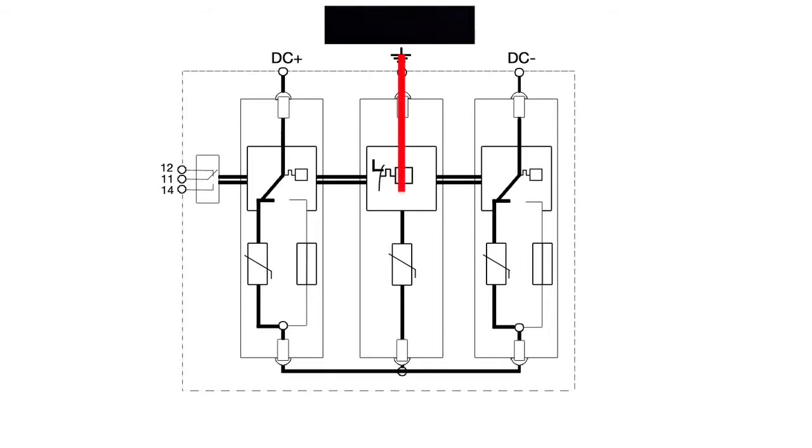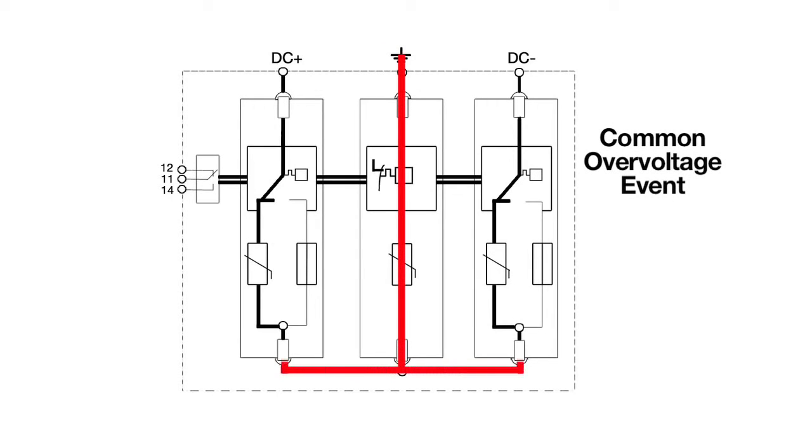The most common over-voltage event is a lightning strike from the ground feed. The overload seen by the surge protective device is reduced by the MOV to an acceptable system voltage.